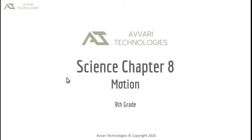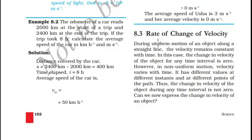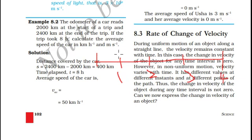Welcome to this series of science lessons. This is a continuation of the previous lecture on rate of change of velocity. During uniform motion of an object along a straight line, if the velocity at different times remains constant at different intervals of time, then the motion is said to be uniform motion. Imagine you are traveling in a bus on a highway, and the bus is traveling at 40 km per hour in the first, second, and third seconds, and so on.